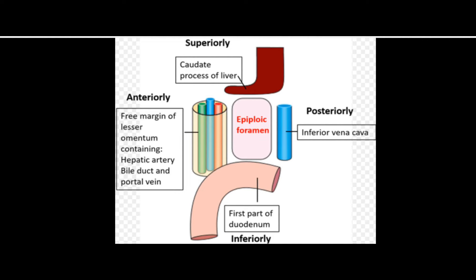The anterior boundary is formed by the free margin of the lesser omentum, containing the hepatic artery, bile duct, and the portal vein — that is, the hepatoduodenal ligament — forming the portal triad consisting of the hepatic artery, bile duct, and portal vein.